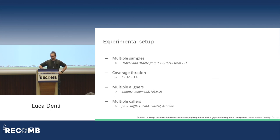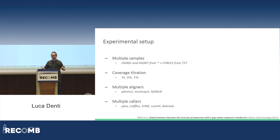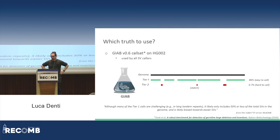That was an overall idea of the approach — there are multiple details not explained here, but you can check the paper. We ran several analyses considering multiple samples: HG002 and HG007 from the deep consensus paper, and CHM14 from the telomere-to-telomere project. We considered different coverages to check robustness, multiple aligners since our input depends on alignment, and we compared against multiple callers. When evaluating our calls, a question came to mind: which truth set should we use? The only truth set available in the literature is the GIAB call set, used by essentially all SV callers in their papers.